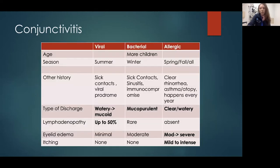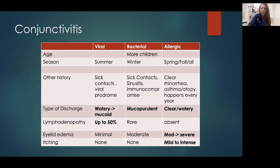Viral conjunctivitis is most common in the summertime. These patients will have a history of someone in their house being sick. They may have viral prodromal symptoms — fever, chills, cough, runny nose — and will have more watery eyes, complaining of tearing. They may have some buildup along the lashes, but for the majority they'll complain of tearing. Their eye will be a little uncomfortable, red, and they may have lymphadenopathy and eyelid edema. Usually it's not very itchy.